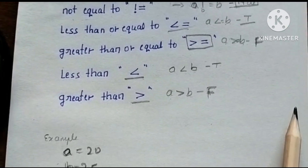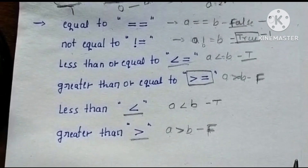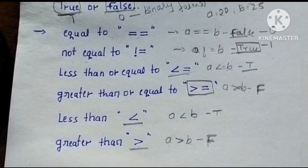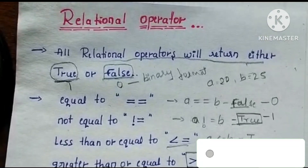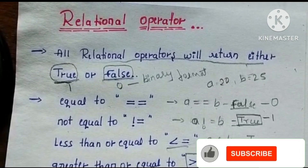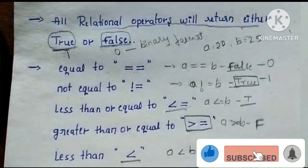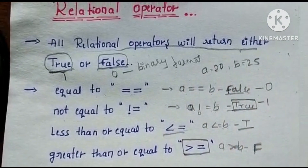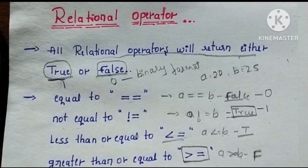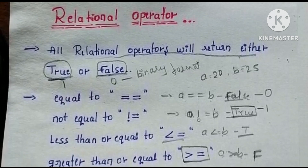So this covers the relational operator symbols and examples. Please subscribe to the channel, like, and share. Thank you guys.